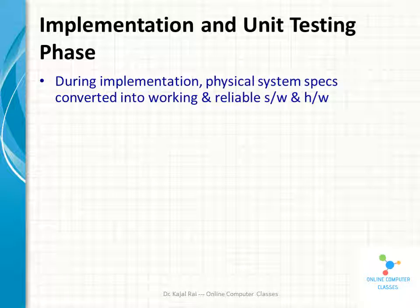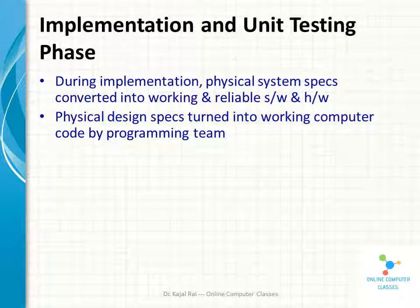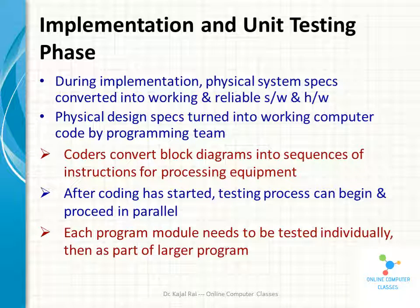During implementation, the physical system specification is converted into working and reliable software. During testing, the major activities are centered around the examination and modification of the code. Initially, small modules are tested in isolation from the rest of the software product. Before testing, coders convert the physical requirements into a working program system, and each module is converted into a set of instructions. After coding is complete, the testing process begins, and each module needs to be tested individually first.